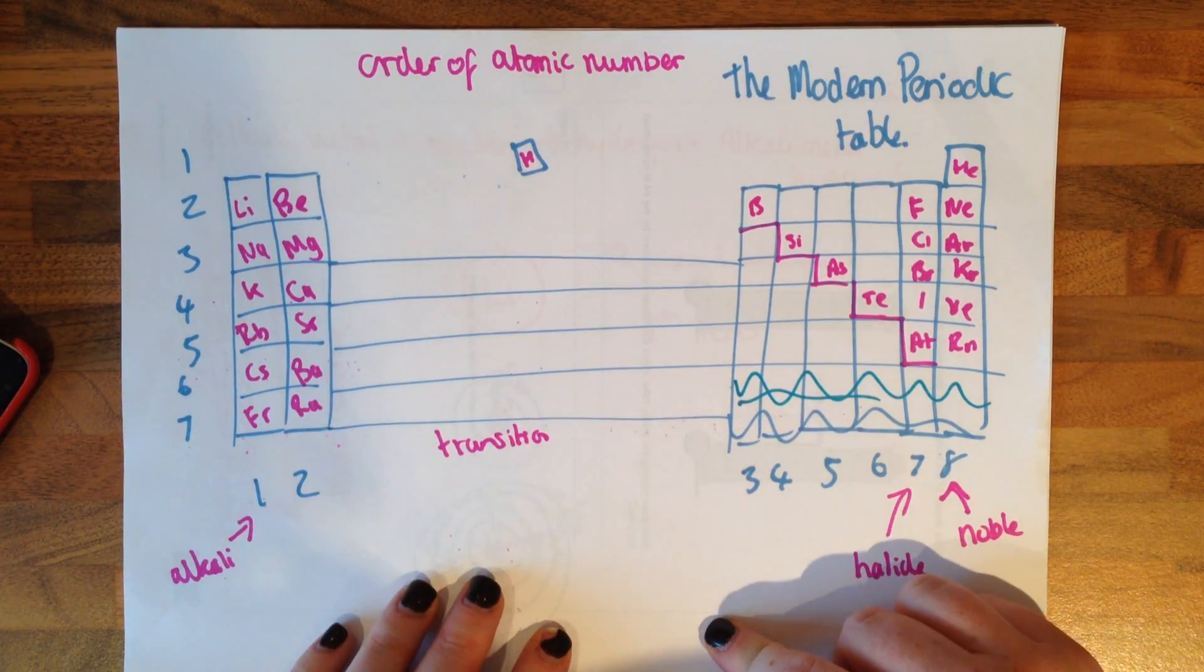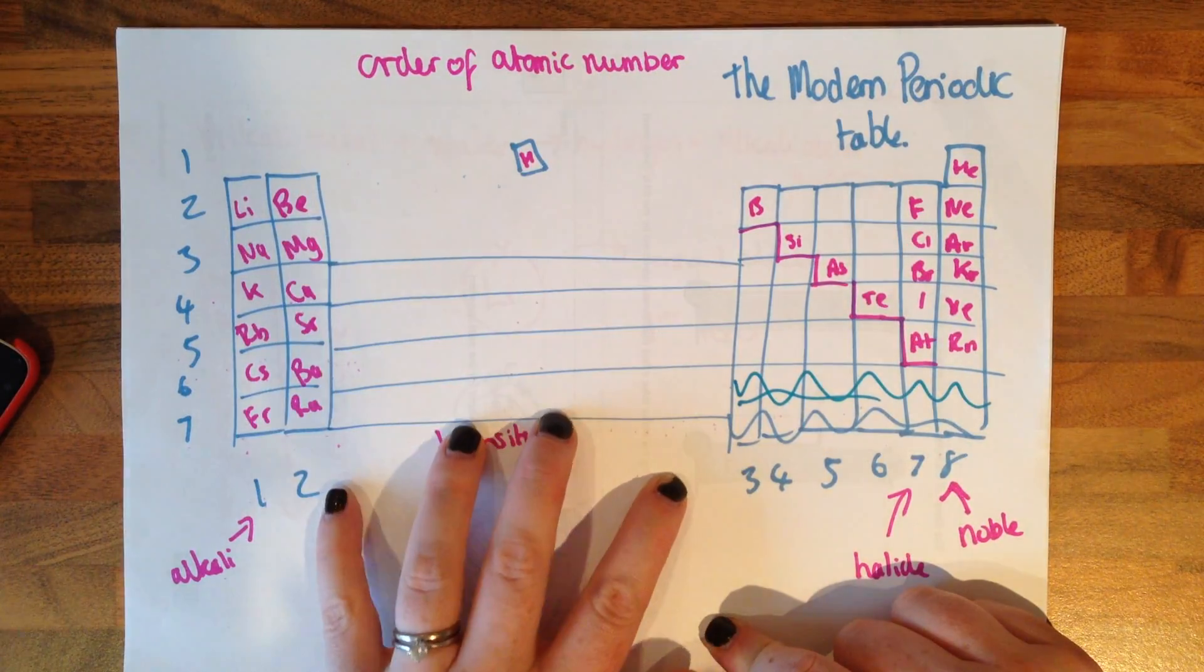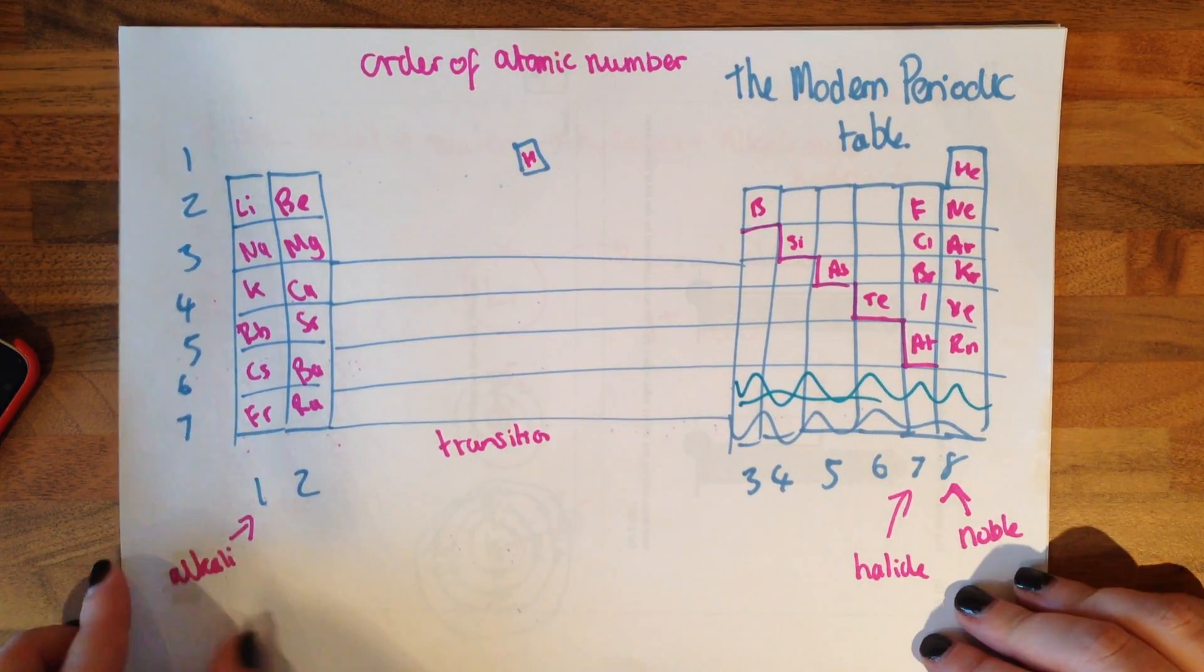So again, things in groups have similar properties. Here we have the alkali metals. Here we have the transition metals in the middle here. We have the halogens and the noble gases at the end here.